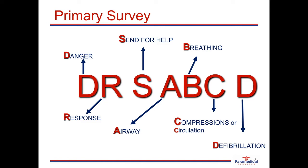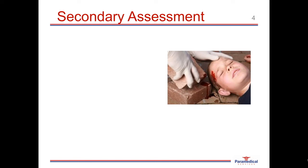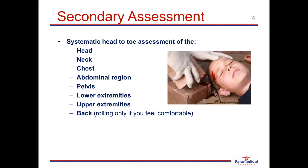Once we've conducted our primary assessment, we move on to the secondary assessment. This is when we systematically look at a person from head to toes for any other life-threatening injuries such as severe bleeding, head injuries, or other abnormalities to report to emergency services. We start by looking at the head, face, top and back of head, moving down to the neck, chest, abdomen, pelvis, legs, and arms. If comfortable, you can roll the patient onto their side to assess their back.